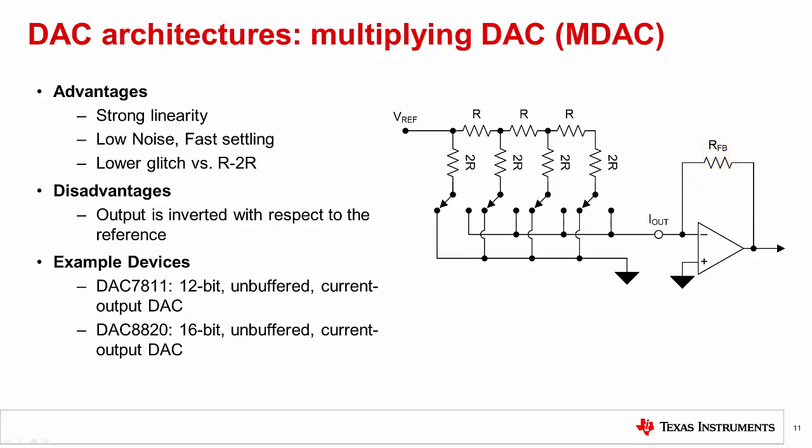Typically, the output amplifier is not included on silicon to provide the most flexibility to the designer's application. This allows the designer to select a high-speed amplifier if they are looking for a dynamic or arbitrary waveform generation type application. Typically, the second eyeout is grounded.